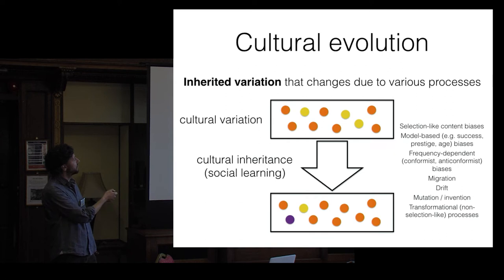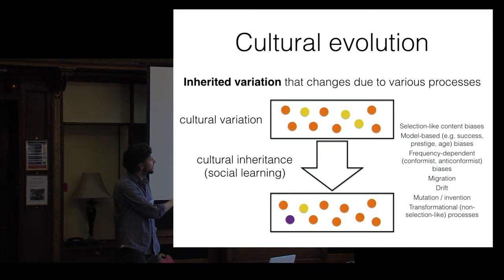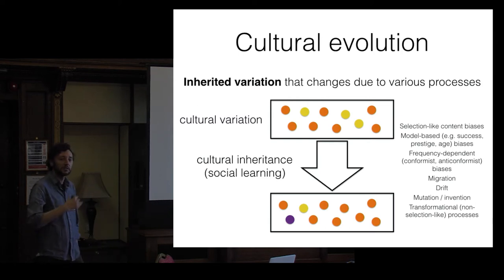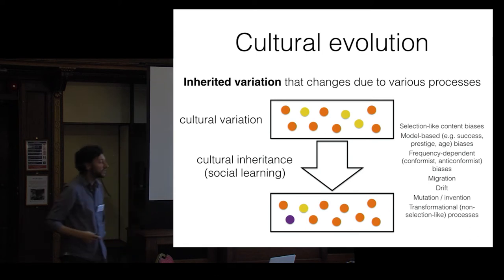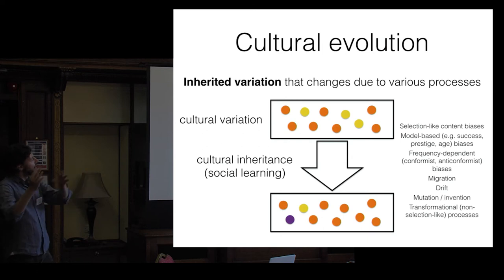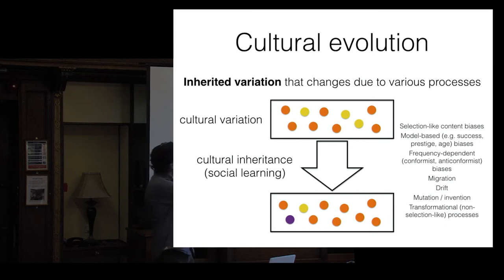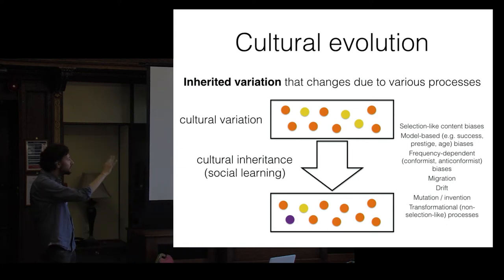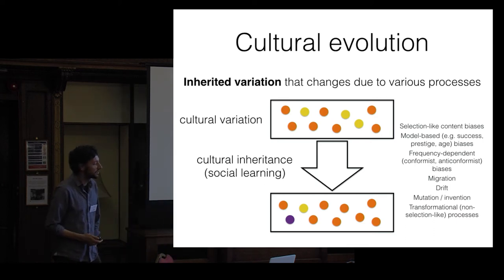So that's the brief sketch of cultural evolution theory: you've got variation, inheritance through social learning, and various processes that change that variation over time — just as biologists have various processes. Some are quite analogous to the genetic evolutionary case, like selection-like content biases, migration, or drift. Some are quite unlike anything in genetic evolution. The argument is not that culture evolves in exactly the same way as genes, but that we can use this general population-thinking framework that Darwin introduced to understand cultural change within a quantitative scientific framework.